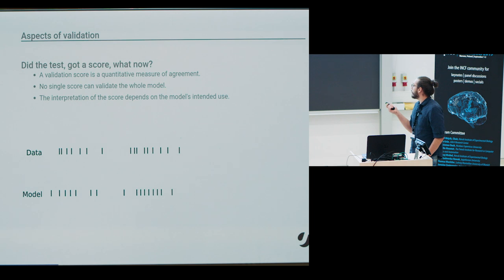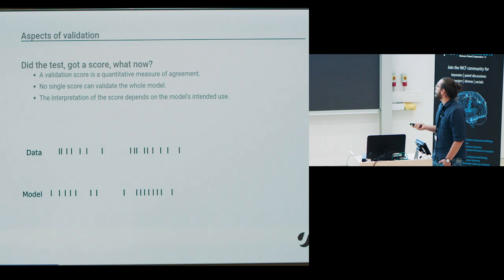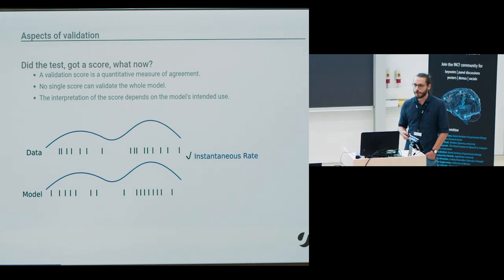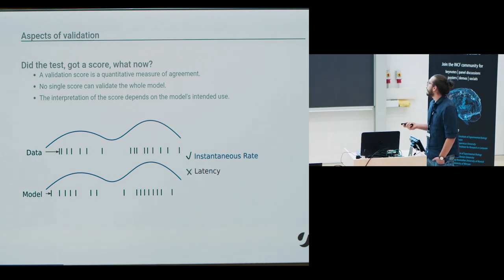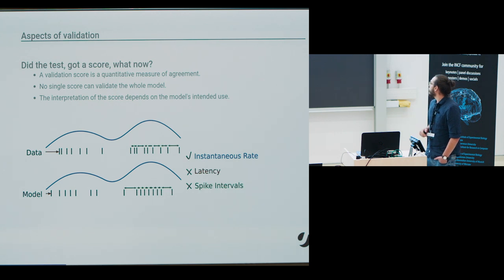To give a brief example, assume you have a spiking model with which you want to describe some data. And in case you were interested in only the rate profile, you might be in luck because this matches quite nicely. However, if you were, when you created the model, rather focusing on the exact spike times, as for example, the latency of the first spike, you'll find a discrepancy and the resulting test would fail. And there might be an additional test, for example, the regularity of the spike intervals, which uncovers another discrepancy which is totally invisible to the first two tests.